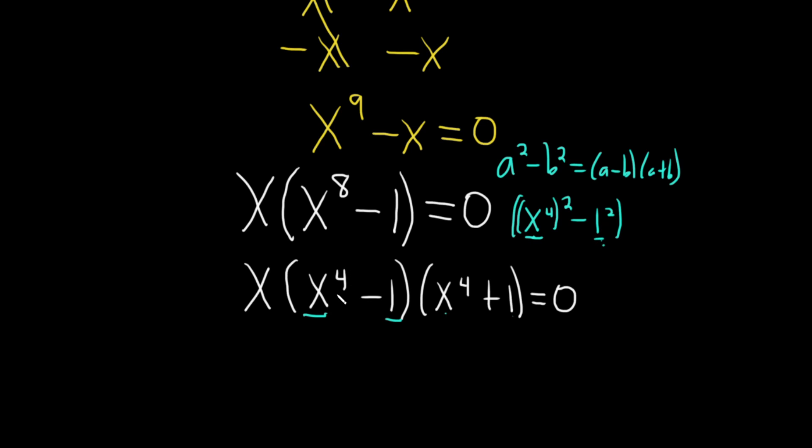Then you can do it again here, right? Because this is x squared squared. So this will be x, x squared minus one, x squared plus one. And then we have x to the fourth plus one.